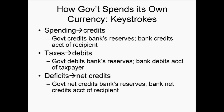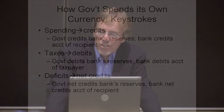How does a modern government actually spend? Through keystrokes. When the government wants to buy something or make a transfer payment — a social security payment — it credits a bank's reserves and the bank credits your demand deposit. All electronically. That's the way modern states spend. So they are spending their own money unit into existence.